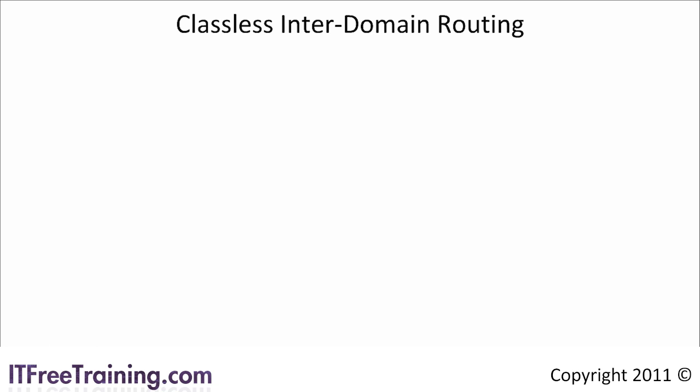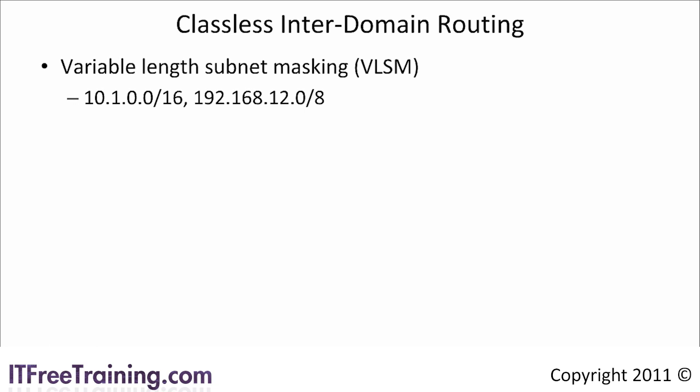This is called classless inter-domain routing. The subnet mask used is called variable length subnet masking. In the real world, classless inter-domain routing is the primary method used and classful networks are a thing of the past. It is important to know about classful networks as they are often referenced in literature and the real world. Classless inter-domain routers use a different way to indicate the subnet mask — the router uses a slash subnet mask as shown in these examples.